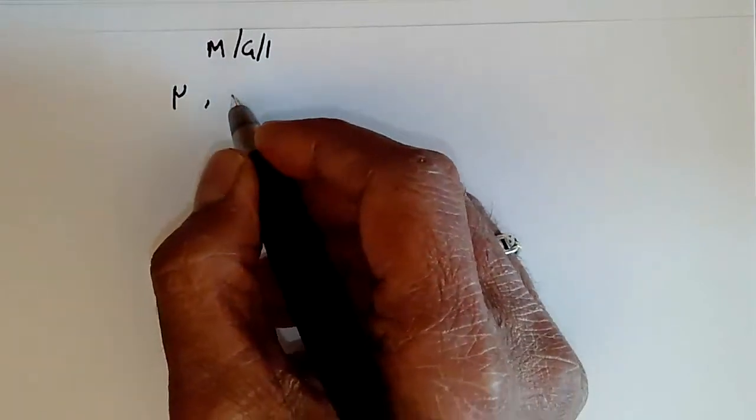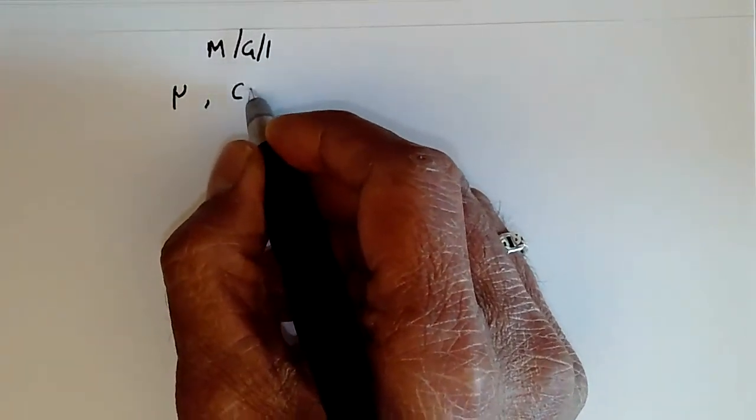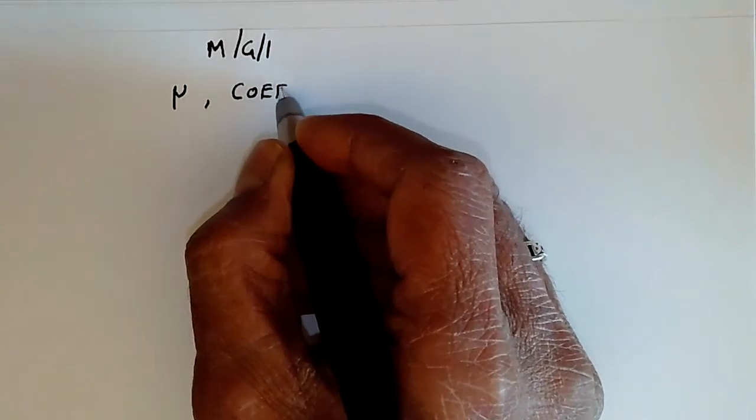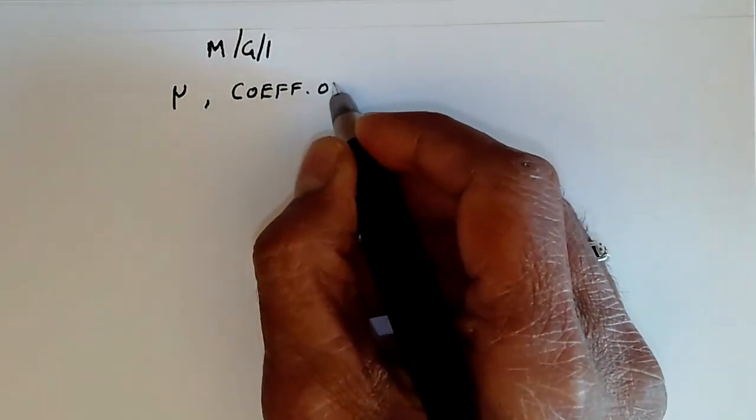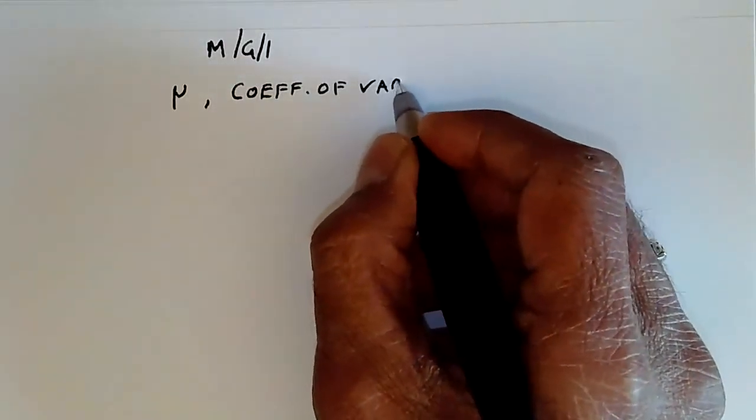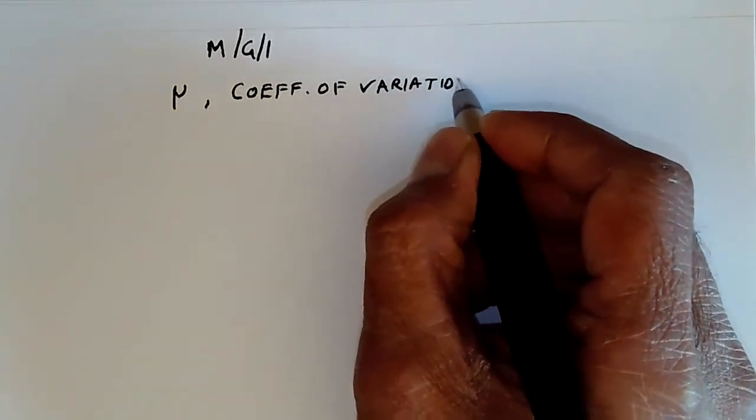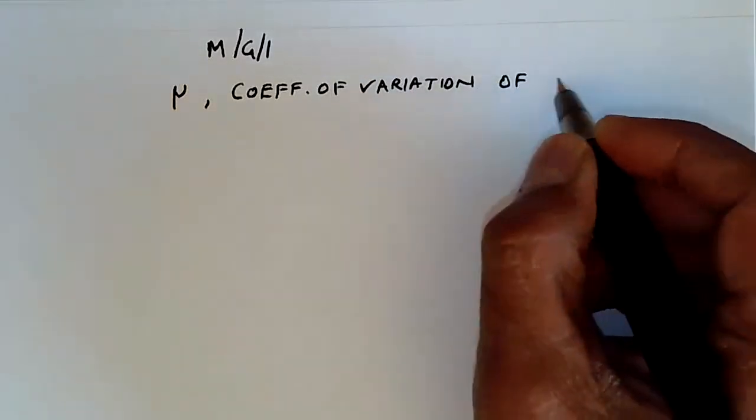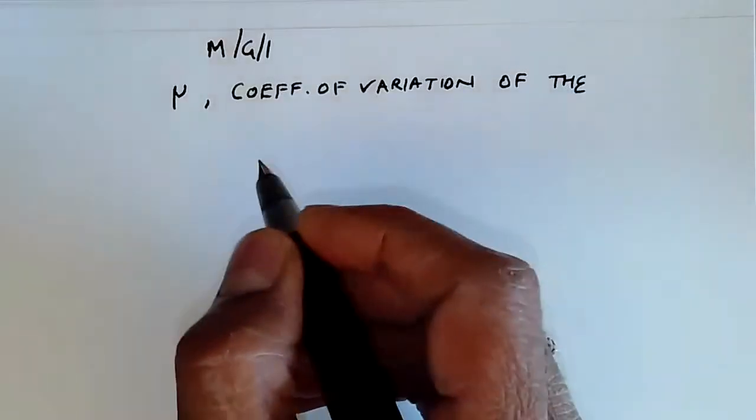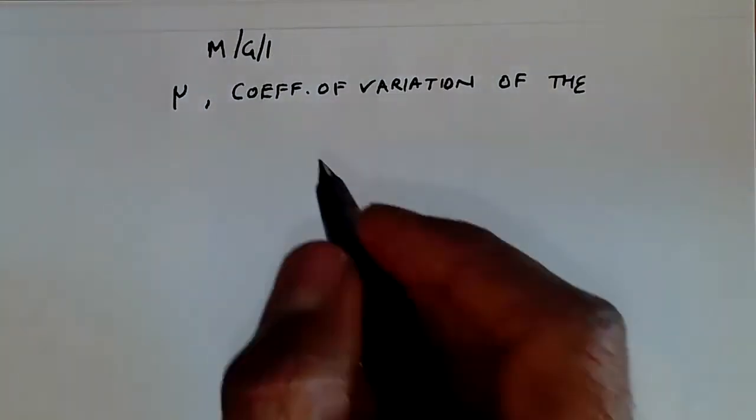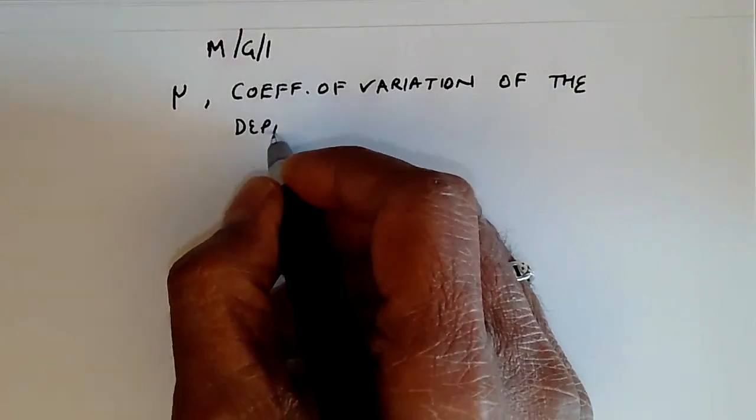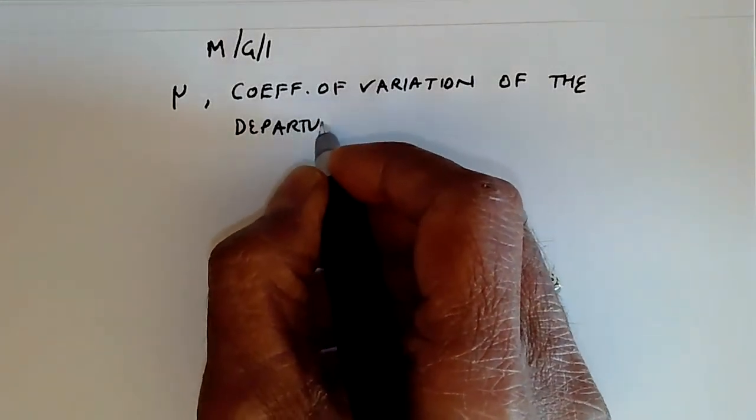Also, we're given the coefficient of variation of the departure process. Let's call that C_S squared using standard notation.